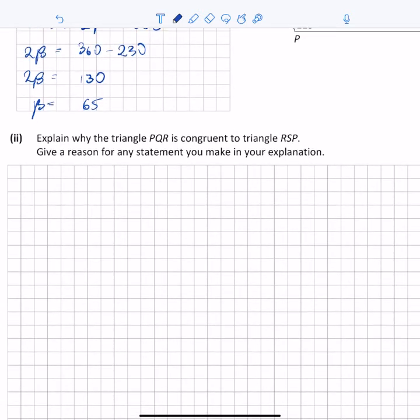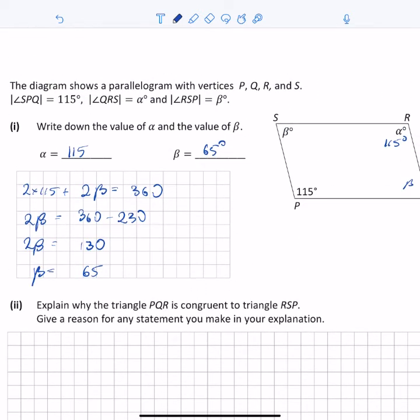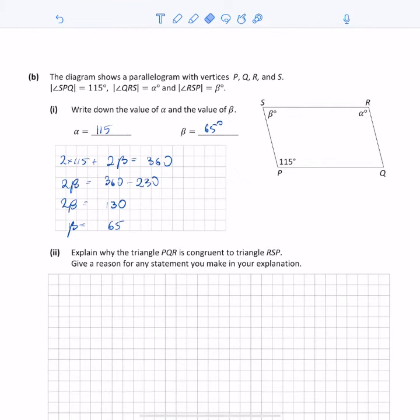Now I have to explain why triangle PQR is congruent to triangle RSP. Drawing a line from R to P forms triangle PQR. I need to explain the reason for congruency.